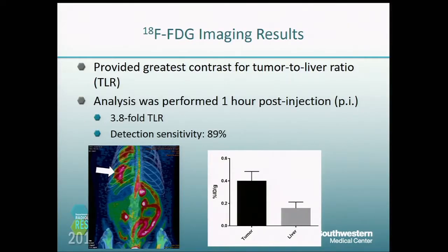Starting with the gold standard FDG, it actually provided the greatest tumor-to-liver ratio, which was 3.8. It also had a fairly high sensitivity of 89%. This makes sense because FDG is good for moderate and poorly differentiated tumors, and approximately 90% of the tumors fall into that category — so this matches up very well with those results.